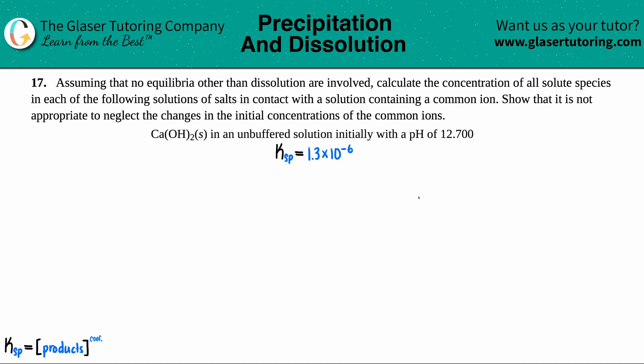Number 17, assuming that no equilibria other than dissolution are involved, calculate the concentration of all solute species in each of the following solutions of salts in contact with the solution containing a common ion. We have calcium hydroxide, CaOH2 solid. This is in an unbuffered solution that initially had a pH of 12.700.